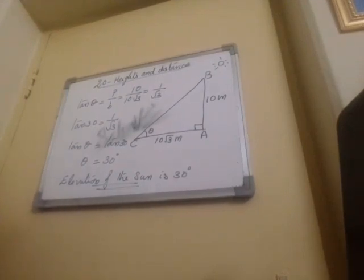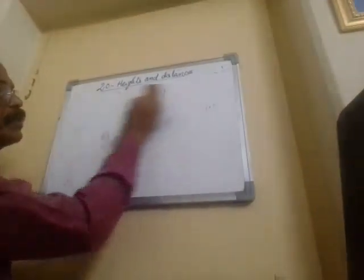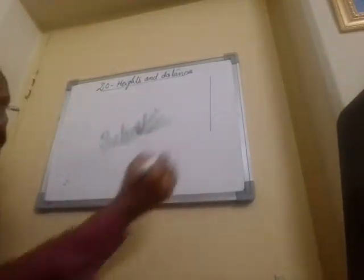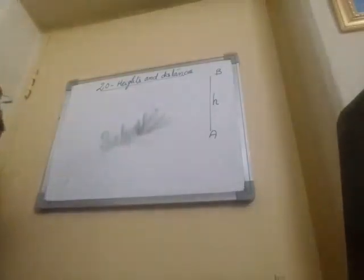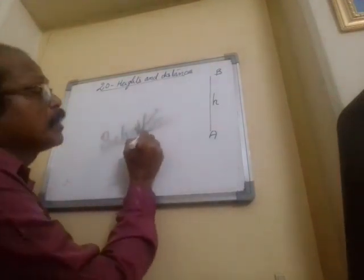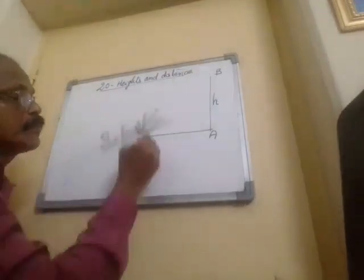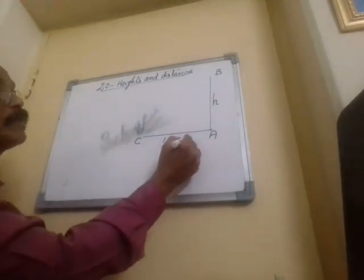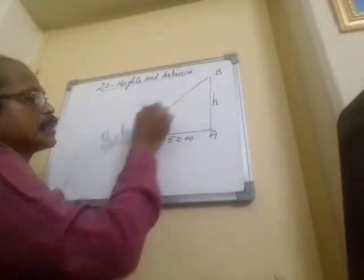Now question number 2: The angle of elevation of the top of a tower from a point on the ground at a distance of 150 meters from its foot is 30 degrees. Find the height of the tower to one decimal place. The tower is taken as AB, and the height we have to calculate is h. From point C, at a distance of 150 meters from the foot of the tower, we observe the top, and the angle of elevation is 30 degrees.